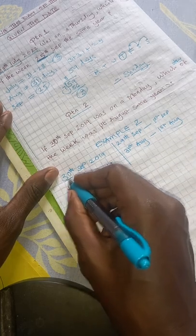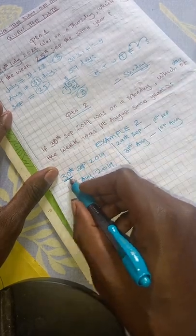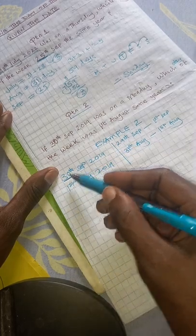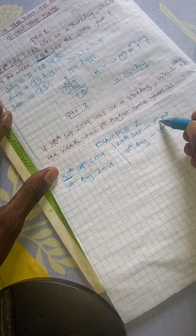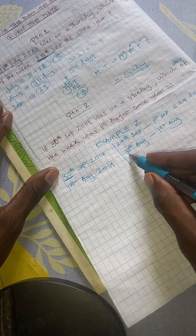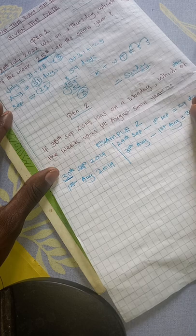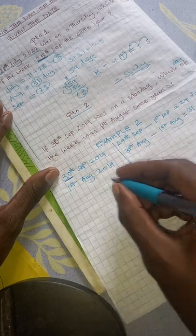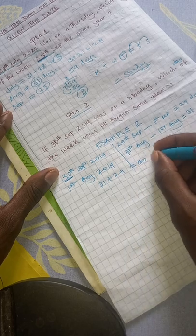Because we are moving backward, we are not going to include 30th September because that is the day we are given, which was on a Monday. So we count from 29th September to 1st September — those are 29 days. From 31st August to 1st August, those are 31 days. Therefore, you get the sum: 31 plus 29 gives you 60 days.